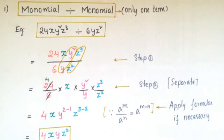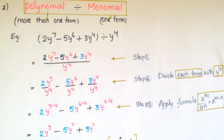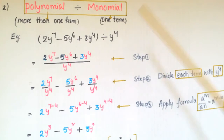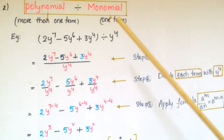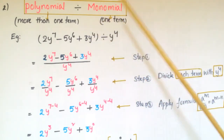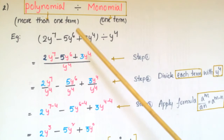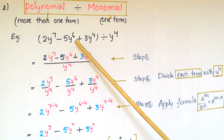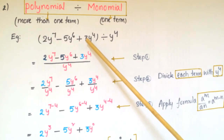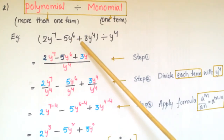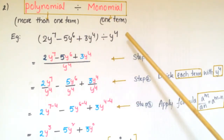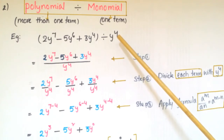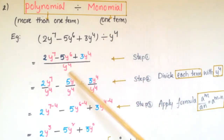The second type is division of a polynomial by a monomial. Polynomial means more than one term and monomial means only one term. Here is the example: 2y⁷ − 5y⁶ + 3y⁴, which has 3 terms, so it is a polynomial.